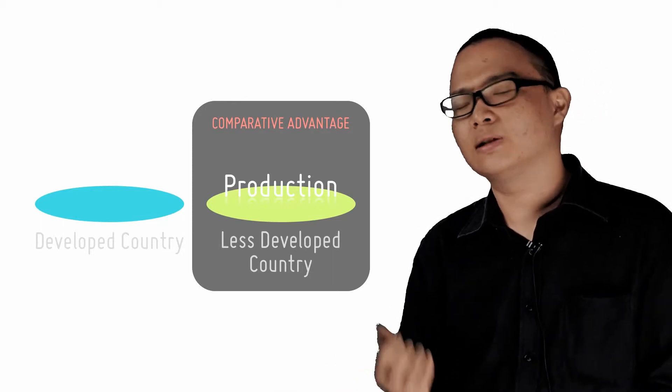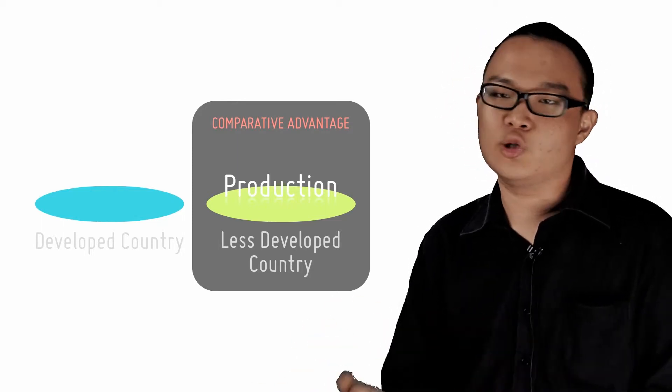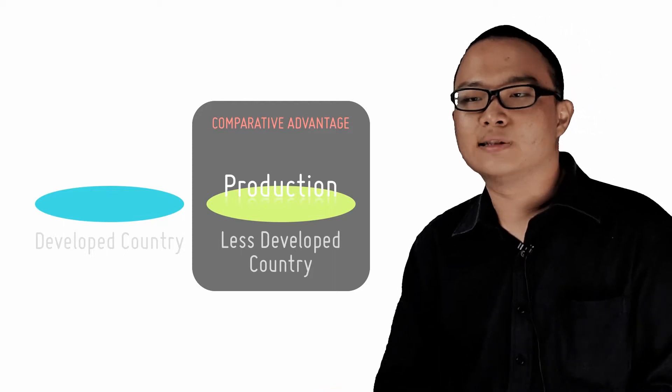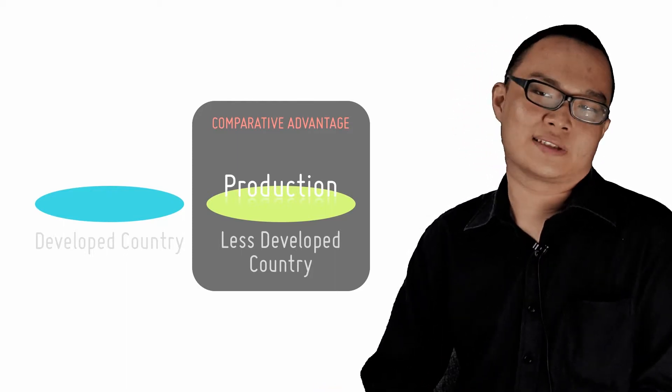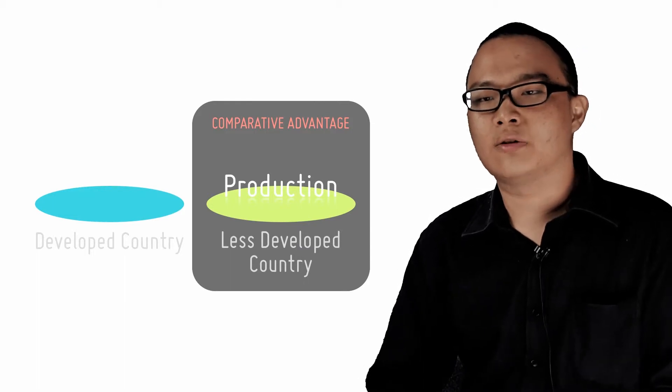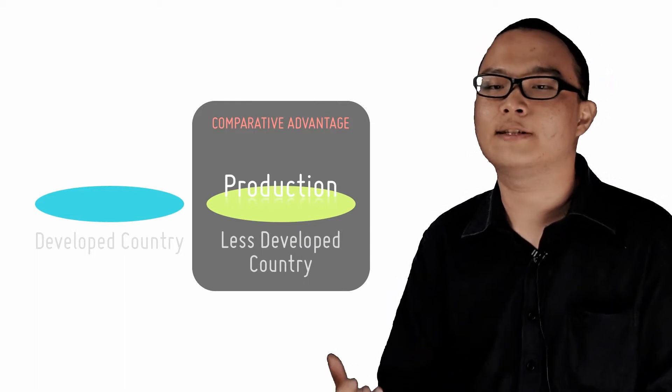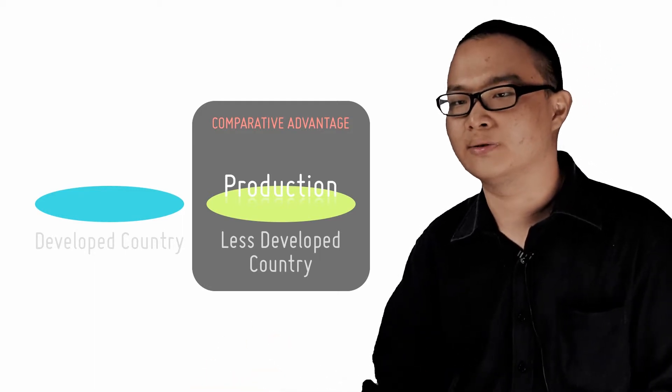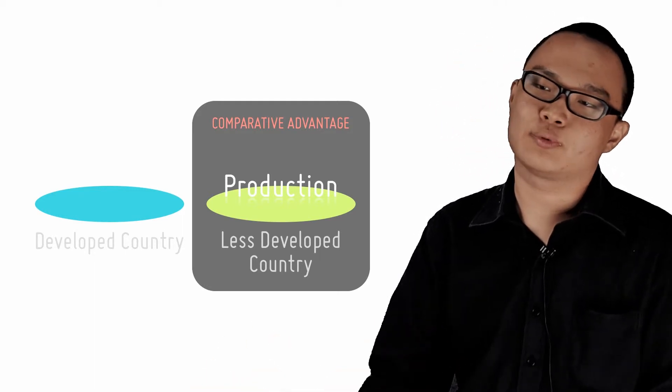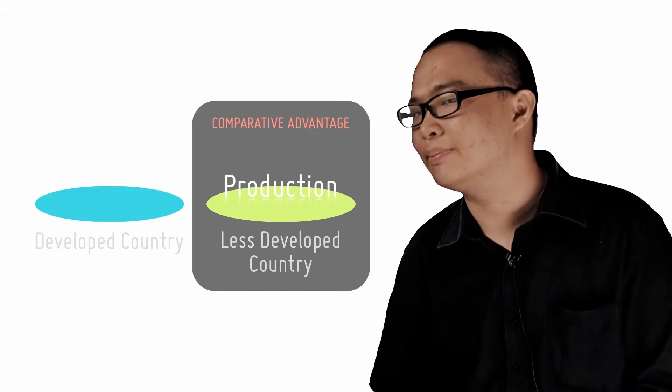This means that countries must always be on their toes and come up with new and better products in order to retain comparative advantage. It's also pretty optimistic as far as economics goes. The maturity and standardization stage allows low cost LDCs to gain a comparative advantage in products developed in developed countries and earn export earnings to drive growth, leveling the playing field.